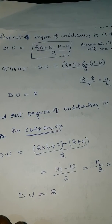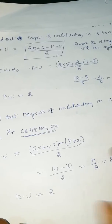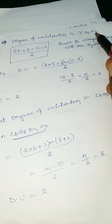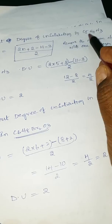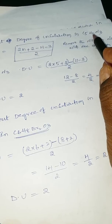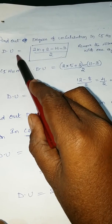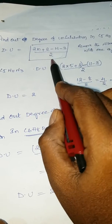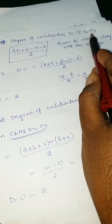The next question is: find out the degree of unsaturation in C5H11N3. The formula for degree of unsaturation is 2N plus 2 minus H, divided by 2. Here, 3 nitrogens are present.